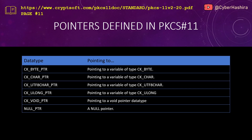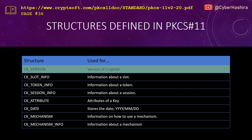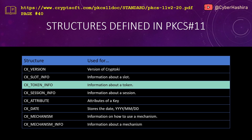PKCS11 also has pointer data types and structures defined in its API. CK_VERSION stores the major and minor version of the cryptokey library. CK_SLOT_INFO has information about a slot such as hardware version, firmware version, and manufacturer. CK_TOKEN_INFO carries information about a token such as label, serial number, model, UTC time, total memory, free memory, and session count.